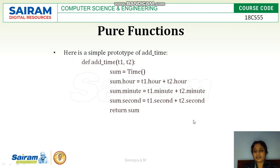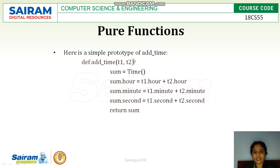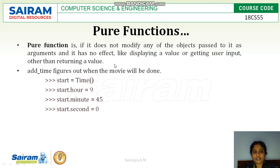Now we will see what types of functions we can use with a class. The first type is a pure function. A pure function takes objects as parameters and uses those objects — for example, it takes the attributes of class objects passed to the function, like calling addtime with t1 and t2 as the two objects passed as arguments.